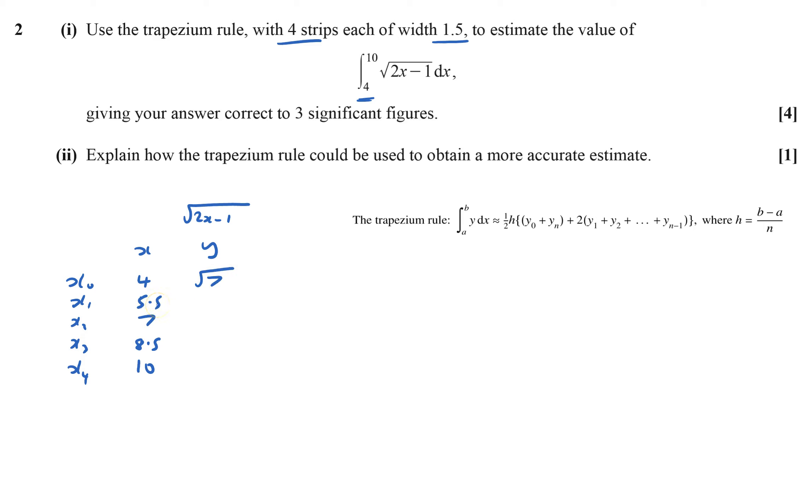Two 5.5s are 11, take away one, that'll be root 10. Next one will be root 13. Next one will be root 16, that's 4, but root 16. And the next one is root 19.